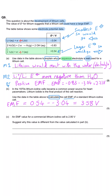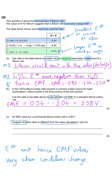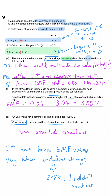Part C notes that the EMF of a commercial lithium-iodine cell is 2.8 V, and asks why this differs from the calculated value of 3.58 V. The only answer we can suggest is that there is something different about the conditions. When we calculated the EMF in part B we used electrode potential values taken under standard conditions, so the best answer for part C is simply that the commercial cell operates under non-standard conditions.